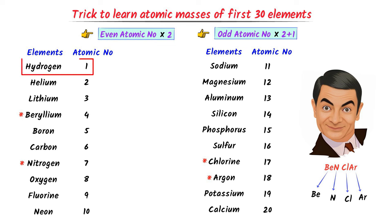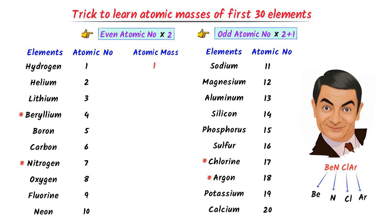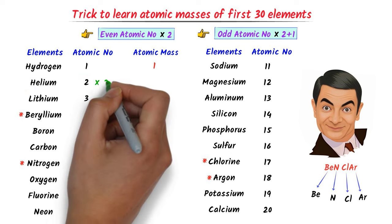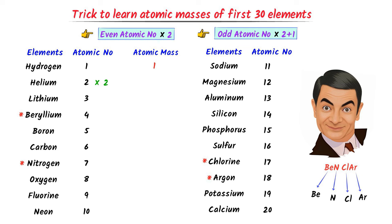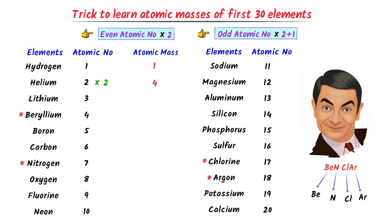The atomic number of hydrogen is 1 and its atomic mass is also 1. The atomic number of helium is 2. It is an even number, so I multiply it by 2. I get 4. Hence, the atomic mass of helium is 4.